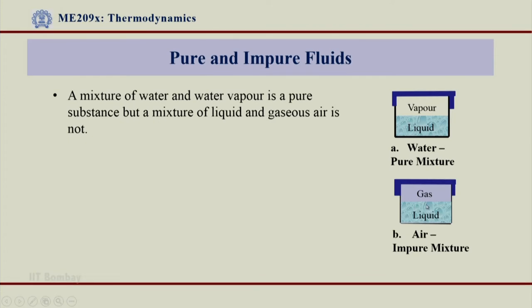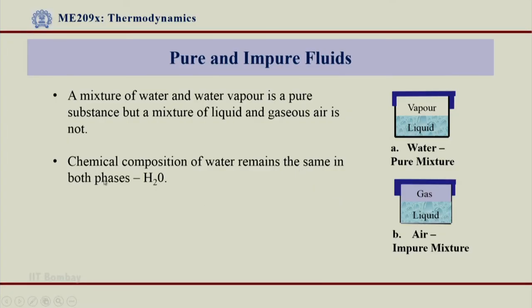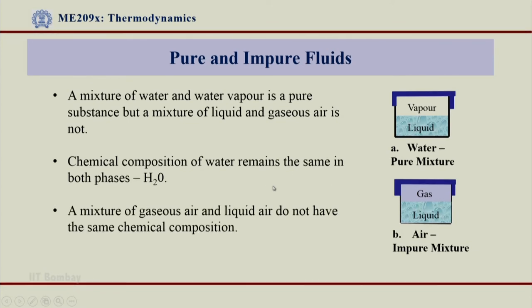What is the reason? What is the important difference between a mixture of liquid and vapour of water versus a mixture of liquid and gaseous air — why is one pure and the other impure? The basic definition comes to our help: it is the chemical composition. The chemical composition of water remains the same in both phases — whether liquid, vapour, or even solid, all three phases are H2O.